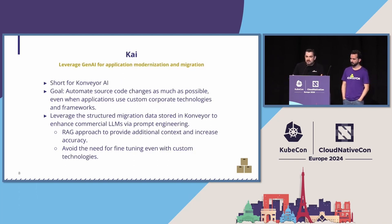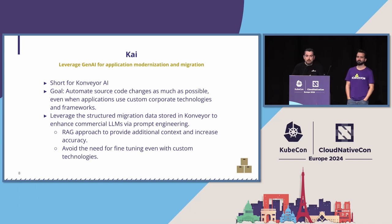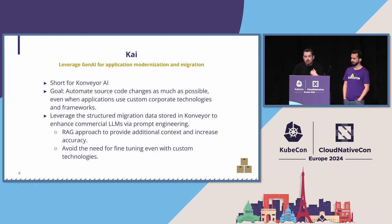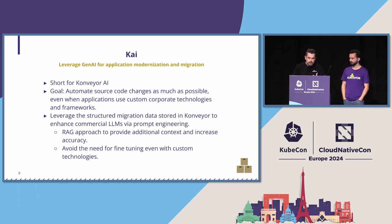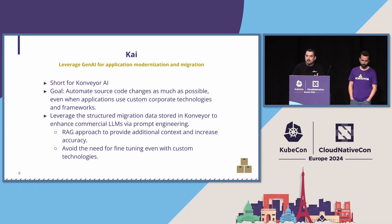Everyone is playing with generative AI, and we are playing with that as well. This next module, KAI — short for Conveyor AI — the idea is to automate source code transformation as much as possible by leveraging generative AI. Our approach is to leverage the structured migration data we have at Conveyor and use that to enhance commercial LLMs, using prompt engineering and a RAG approach to provide additional context to make these LLMs more accurate on the responses, especially when talking about custom technologies and custom frameworks.